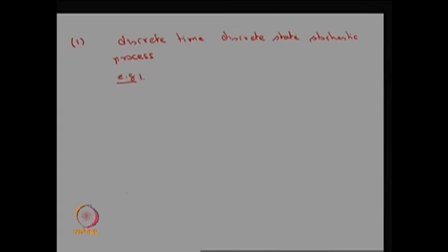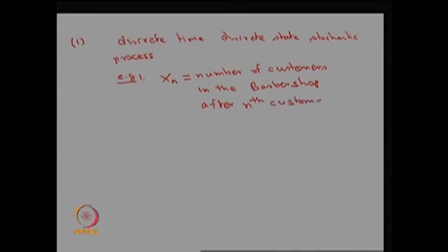Let us see one simple example. Let us create a random variable X suffix n as nothing but the number of customers in the barbershop after the nth customer's departure from the barbershop. Here the suffix n forms a parameter space, therefore T can take the possible values of n — that means whenever one customer leaves the system, how many are in the system.